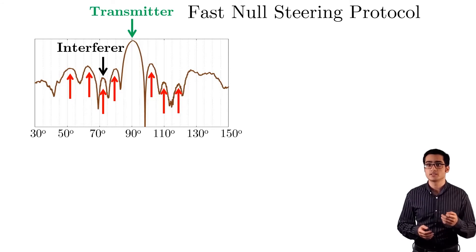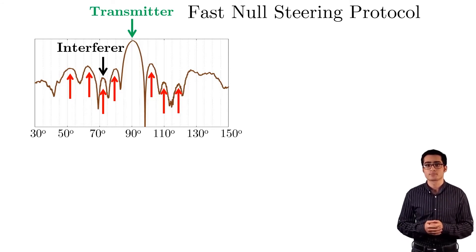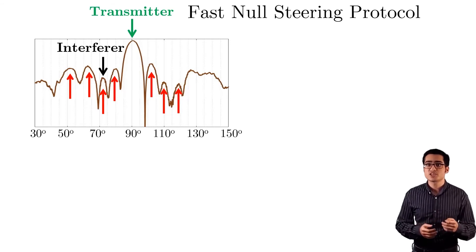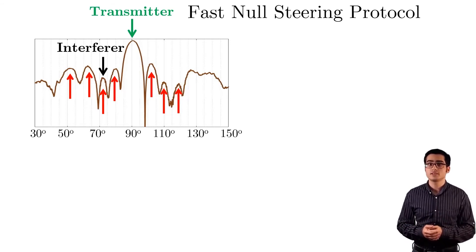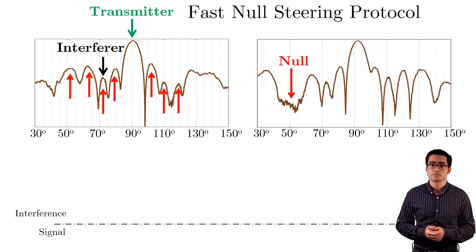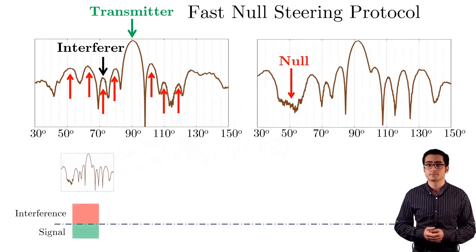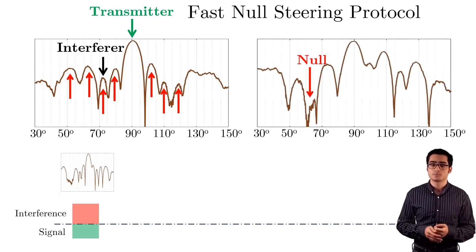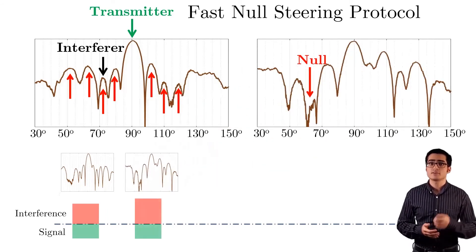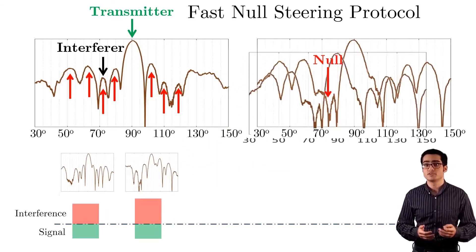Nullify's protocol starts by nulling the side lobes and estimates the interference and signal power. Instead of scanning all directions one by one to find the interference, Nullify only nulls these seven side lobes. So we create a null at the first side lobe and we measure the received power. We then create a null at the second side lobe, and at the third side lobe, until the interference disappears.